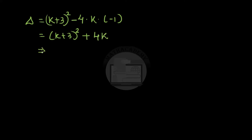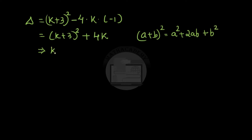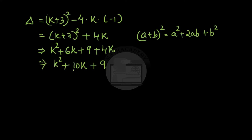Let us expand the bracket. Using (a plus b) whole squared equals a squared plus 2ab plus b squared, this becomes k squared plus 6k plus 9, plus 4k, giving us k squared plus 10k plus 9.